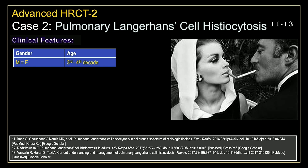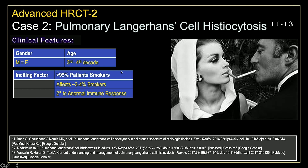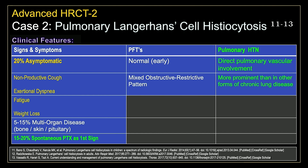Pulmonary Langerhans cell histiocytosis affects men and women equally, typically presenting in the third or fourth decade of life. The inciting factor in 95% of patients is cigarette smoking. It tends to affect about 3–4% of smokers and is believed to be due to an abnormal immune response to the more than 7,000 antigens present in cigarette smoke. Patients tend to be symptomatic — only about 20% will be asymptomatic. Those with symptoms typically complain of a non-productive cough, exertional dyspnea, fatigue, and weight loss. As many as 15% of patients may develop multi-organ system disease involving the skin, bones, and pituitary gland. Up to 20% of patients may present with a spontaneous pneumothorax as the very first manifestation of their disease.